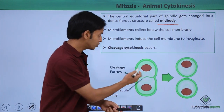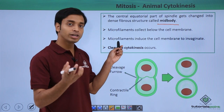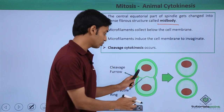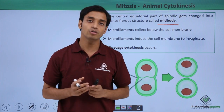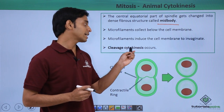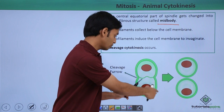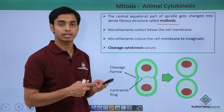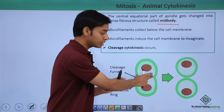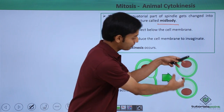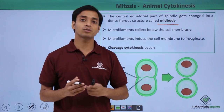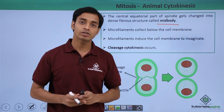The microfilaments start collecting just below the cell membrane and begin inducing the cell membrane to invaginate, forming an invagination. This invagination is basically the cleavage furrow formation, which typically happens in animal cells. This cleavage furrow slowly deepens inside, and then the two daughter cells get pinched off after the furrow touches across. This is the process of cytokinesis occurring in animal cells.